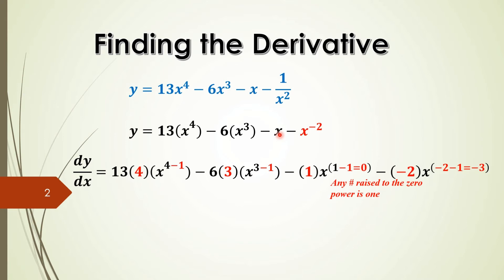This becomes 0. Anything raised to the 0 power, as stated here, is going to equal to 1. So this whole term here becomes 1. And then we go to the last one.